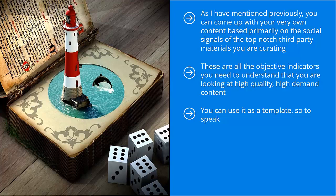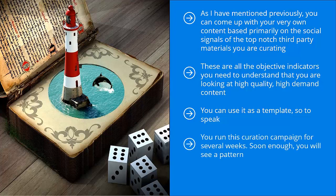Another approach would be to just do curation first. You take all the high-quality third-party content with great social signals and put them all on auto-publish on your social media accounts. You run this curation campaign for several weeks. Soon enough, you will see a pattern — some of these materials get a lot more engagement than others. At that point, you can come up with your own version.